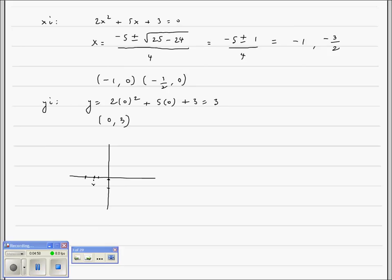The intercepts, we had negative 1 here. We had negative 3 over 2. Negative 1 and a half right there. And we had a y-intercept of positive 3.